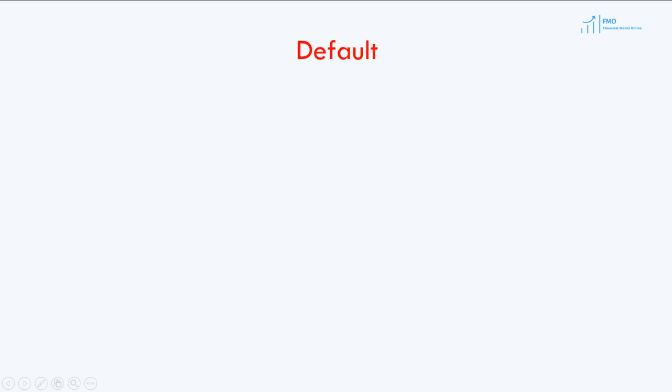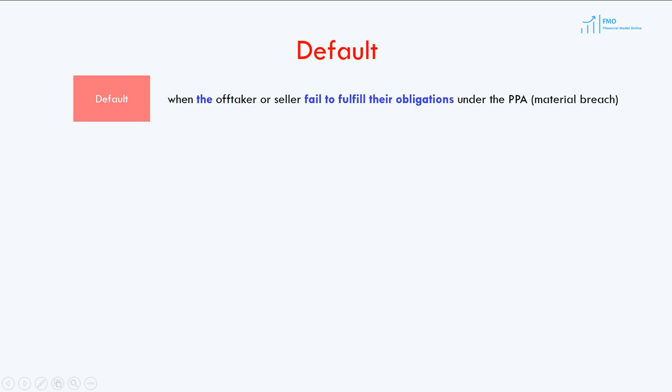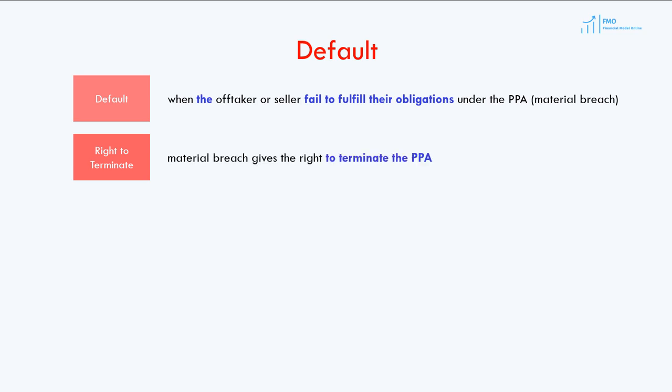When the off-taker or the energy seller fail to fulfill their obligations in the PPA, an event of default is triggered. Default is a material breach of the PPA, which gives the right to the off-taker or the seller to terminate the PPA.